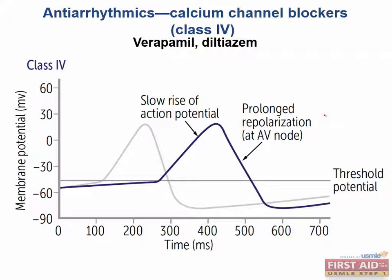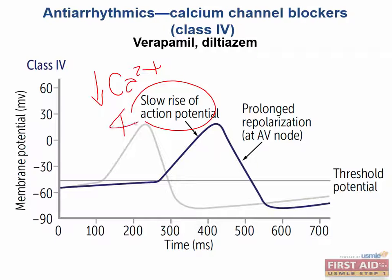Both of these L-type calcium channel blockers decrease the slope of the pacemaker action potential because they decrease the influx of calcium. Calcium is responsible for the upstroke of phase 4 in the pacemaker action potential. On an electrocardiogram, we're going to see an increase in the PR interval. The PR interval represents the period in which the impulse is delayed through the AV node.